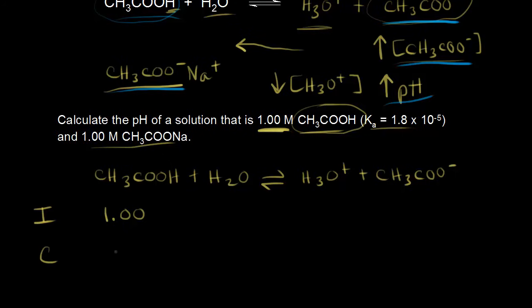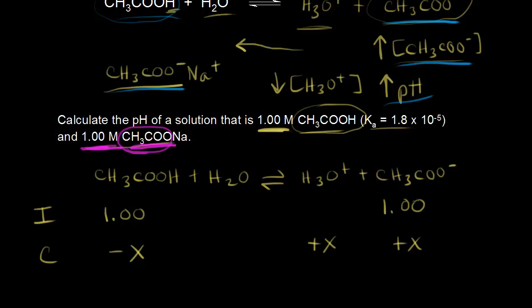For our change, whatever concentration we lose for acetic acid, we would gain for the acetate anion, and therefore we would gain for the hydronium ion. But we have to add in something because we're also dealing with the 1.00 molar concentration of sodium acetate — another source for acetate anions. So really we have 1.00 molar. The acetate ions come from two sources: the ionization of acetic acid, and the sodium acetate that you add in. So your initial concentrations would be 1.00 molar for acetic acid, 1.00 molar for the acetate anion, and pretty close to zero for hydronium.